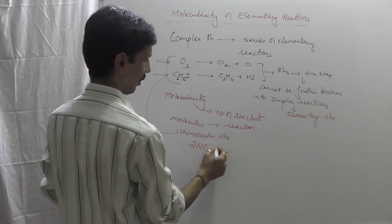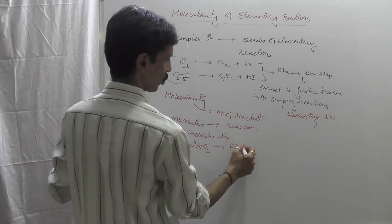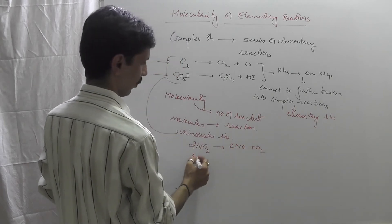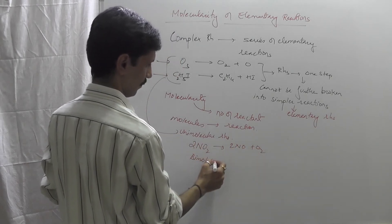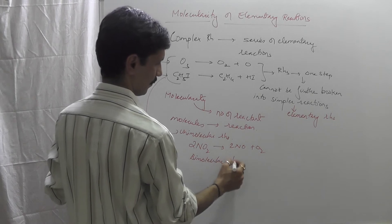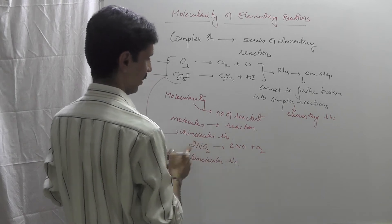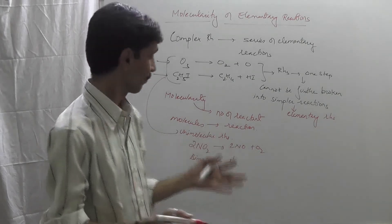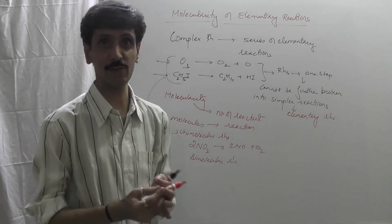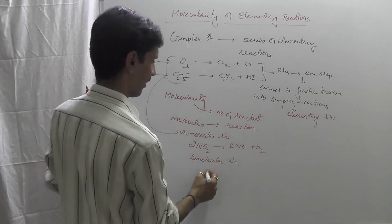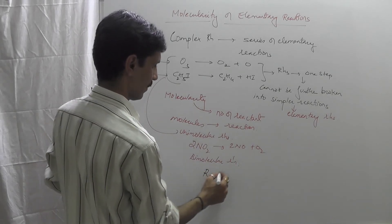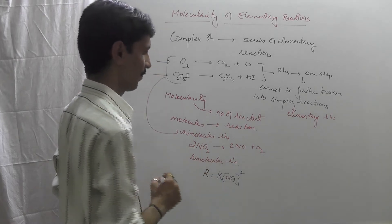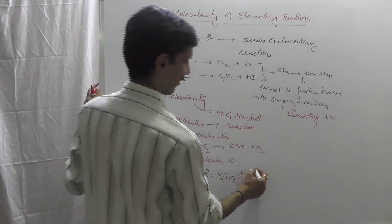If I write the reaction 2NO2 gives 2NO plus O2, then this is a bimolecular reaction. When you talk about its rate law expression, the rate law says R is equal to K into [NO2] raised to 2. So it is a second order reaction.